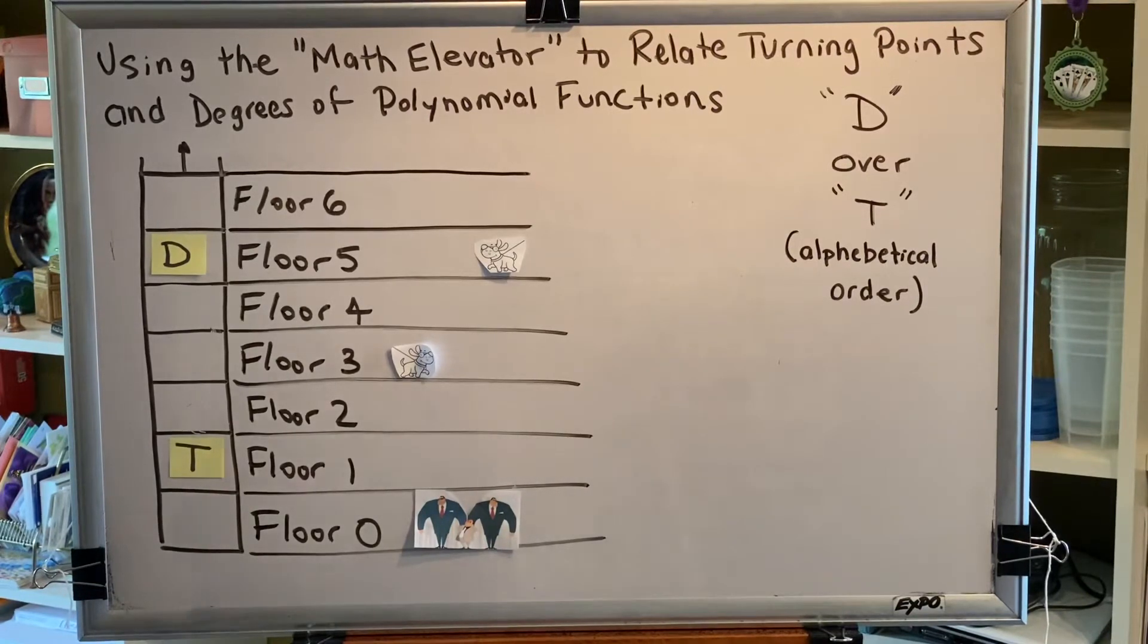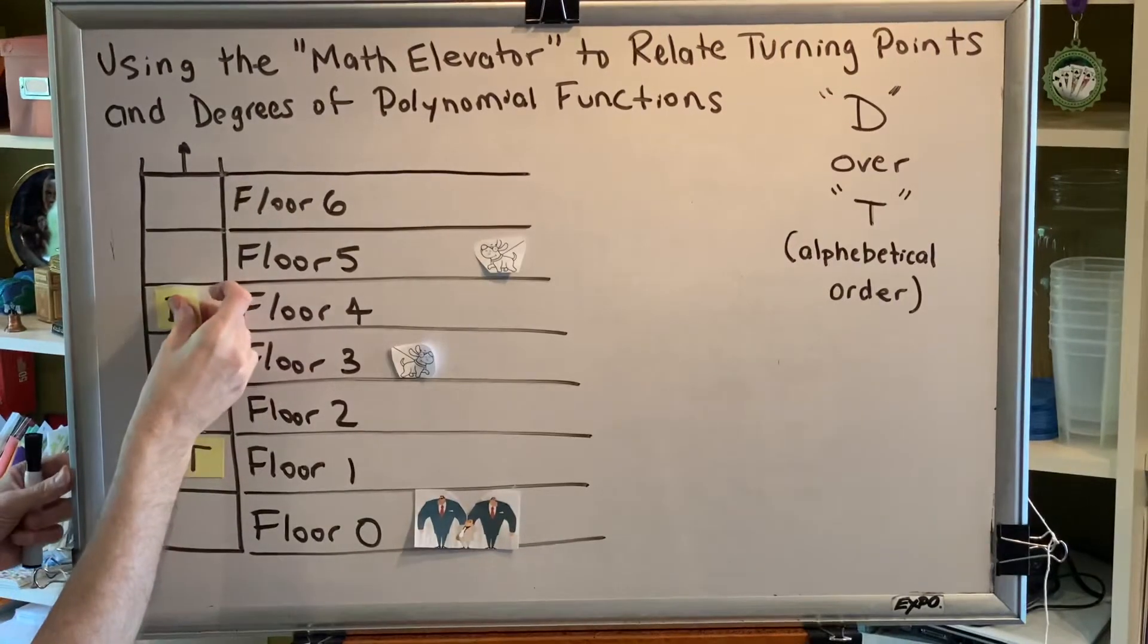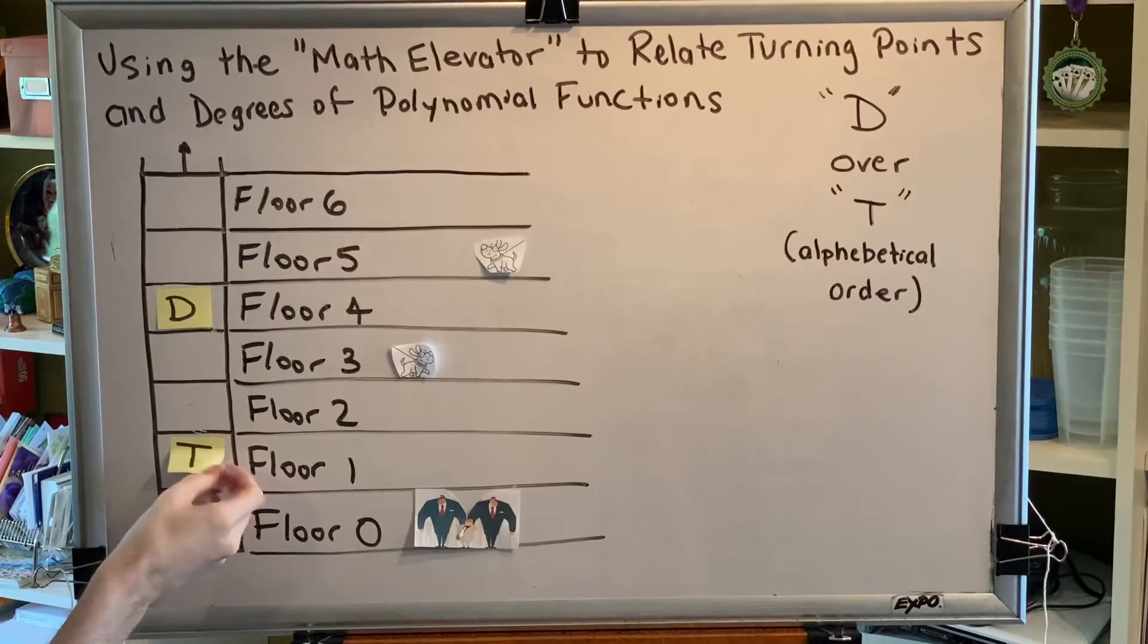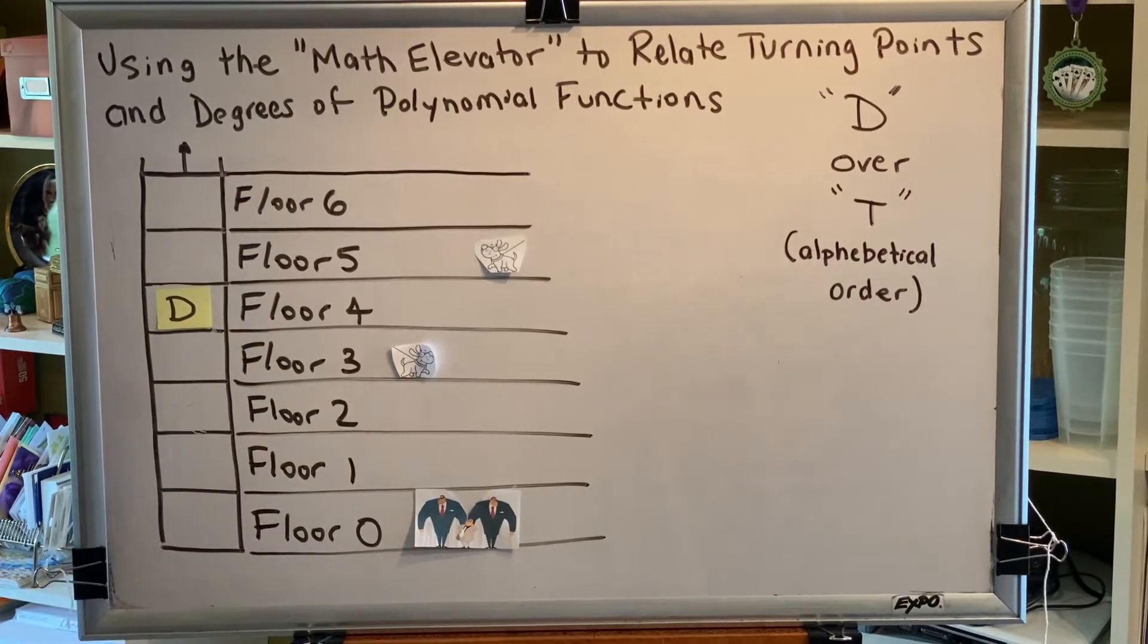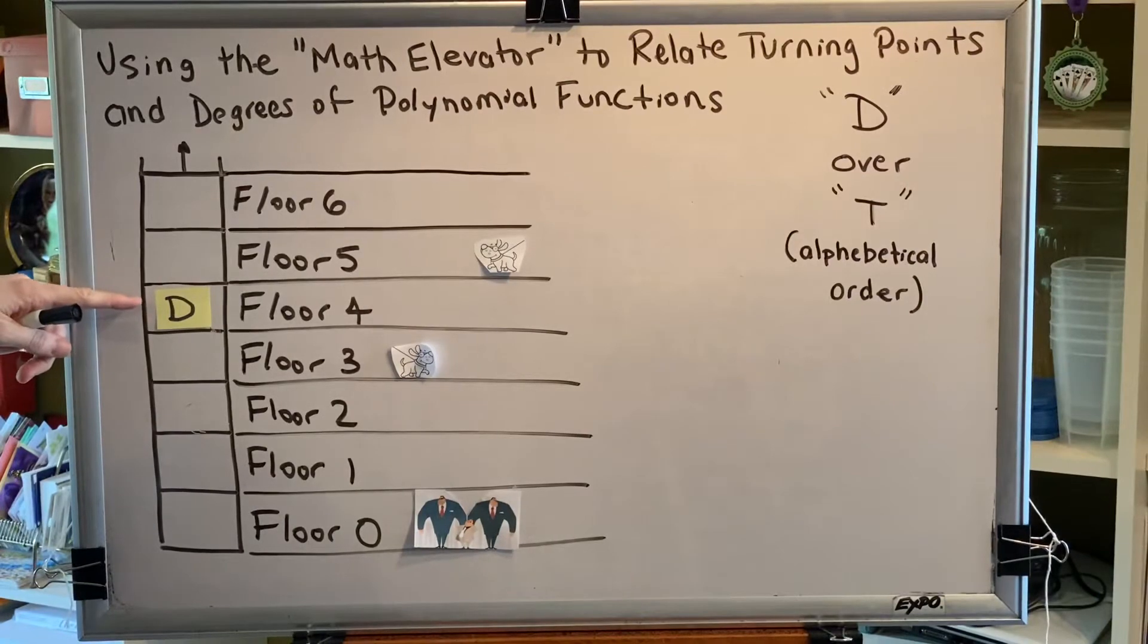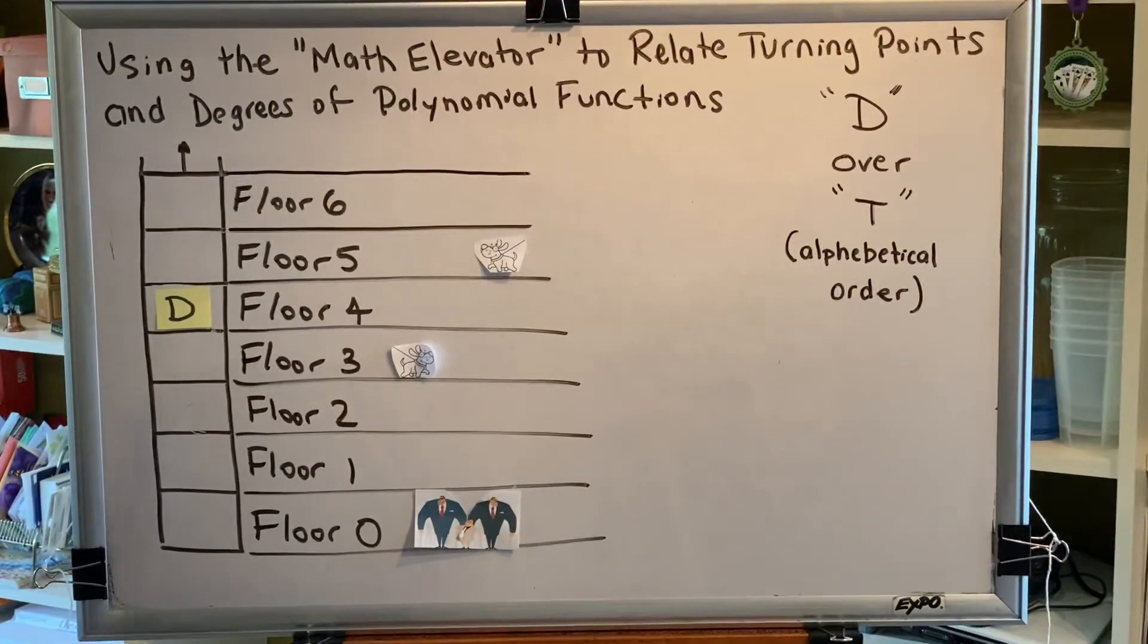For example, let's say someone tells you, hey, I have a polynomial function and the degree is four. That means that our D car is on the fourth floor.